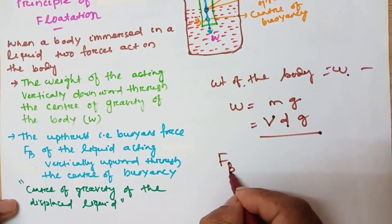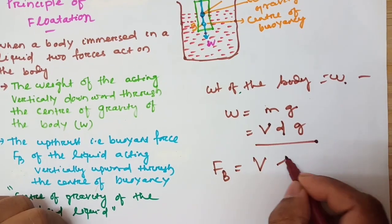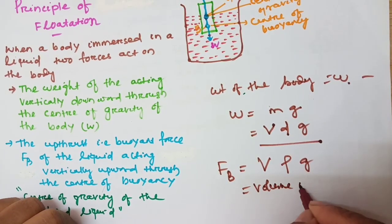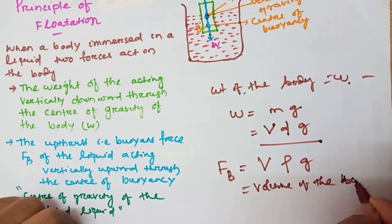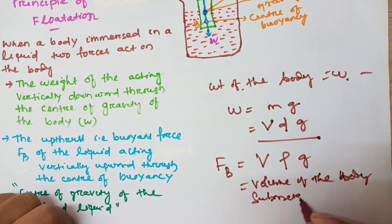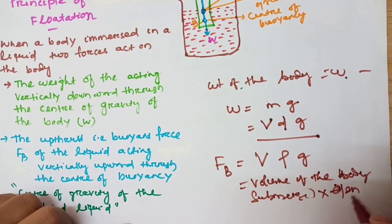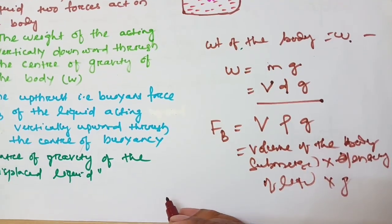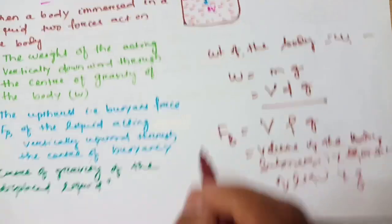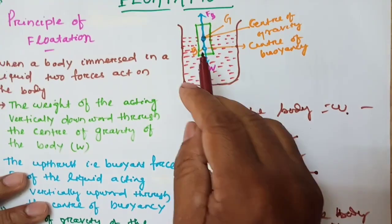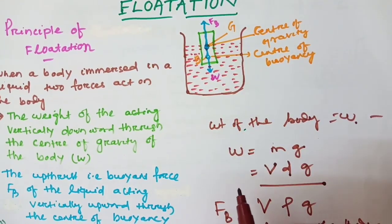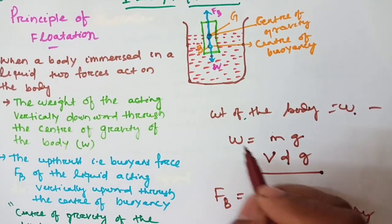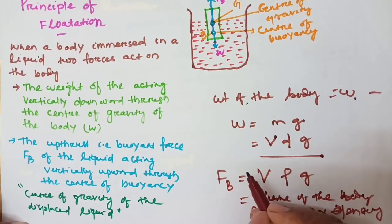The other force is the buoyant force. The formula for buoyant force is B = V·ρ·G, where V is the volume of the body submerged, ρ is the density of the liquid, and G is acceleration due to gravity. The buoyant force is maximum when the body is completely immersed, because if a body is immersed partially, the buoyant force is less in comparison to a body completely immersed.